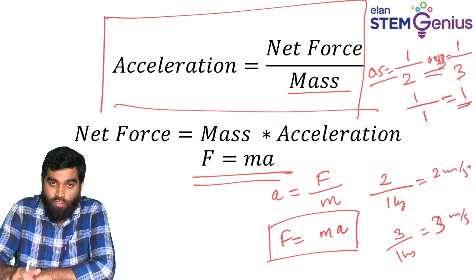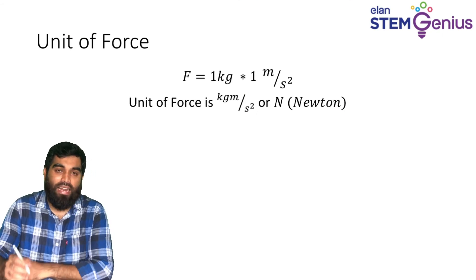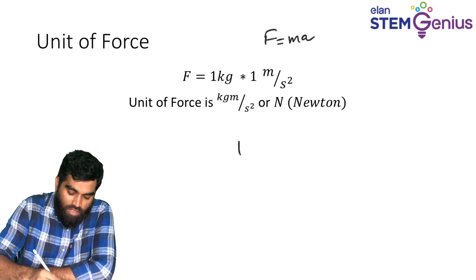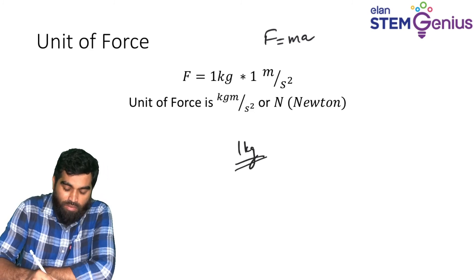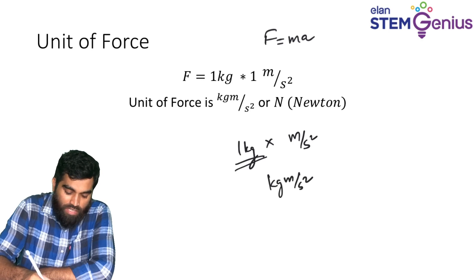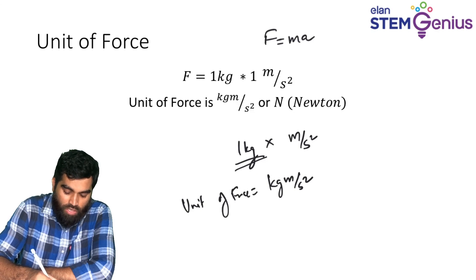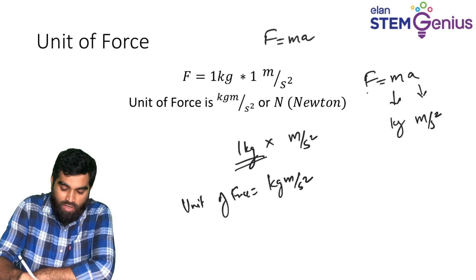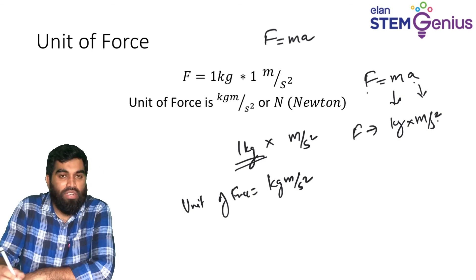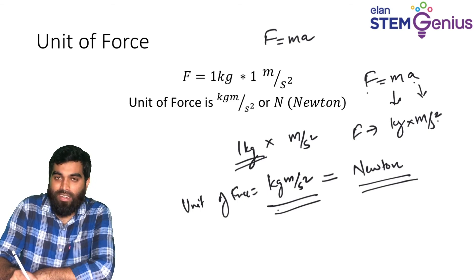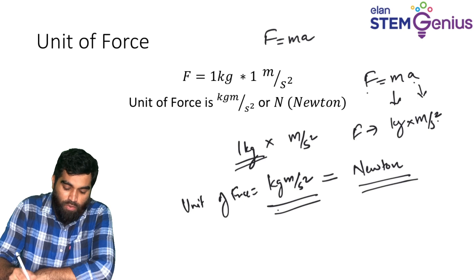So F = ma. What is the unit of force? Mass unit is kilogram, acceleration unit is meter per second squared. So F equals kilogram times meter per second squared, which is kilogram·meter per second squared. That is the unit of force, and we call it Newton. So the unit of force is Newton.